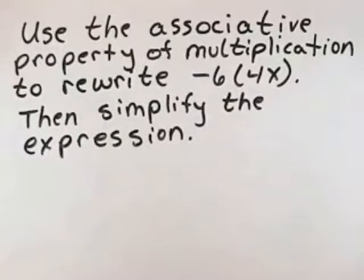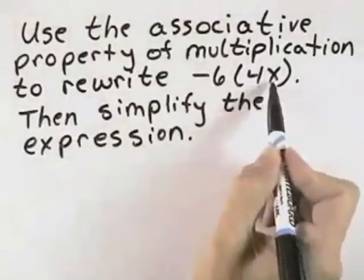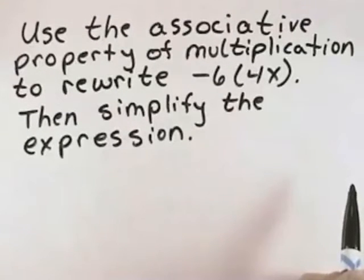Use the associative property of multiplication to rewrite negative 6 times the quantity 4 times x. Then simplify the expression.